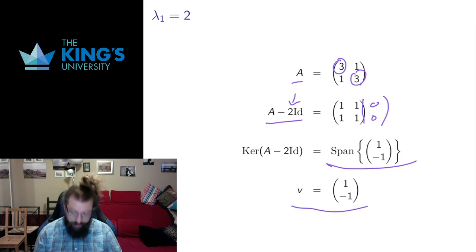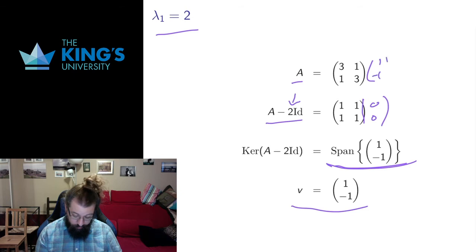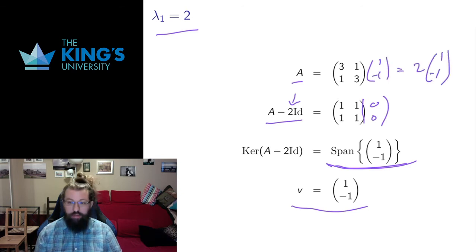If I want to write my eigenvector, I can choose anything in the span. Eigenvectors are not unique. They can be scaled. So I'll just write 1, negative 1, and it seems like the simplest way to write that. And that is going to be the matching eigenvector for eigenvalue 2. So the original matrix, if I acted on this eigenvector, it's going to give me 2 times this. And you can double check that that is in fact true.